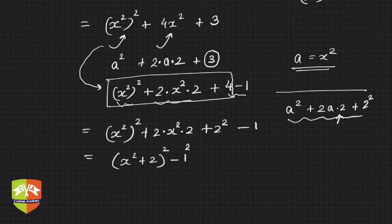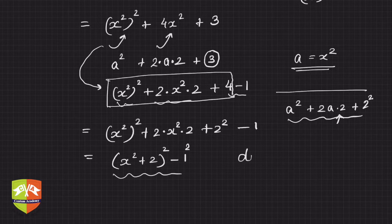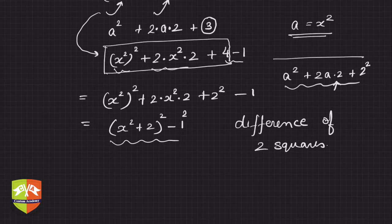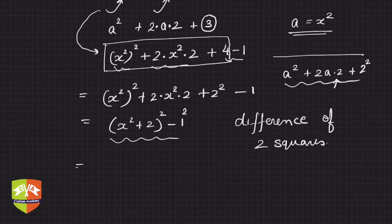Now this can be written as 1 squared. And this is what we intended to find, why? Because now this is difference of two squares, my friends.